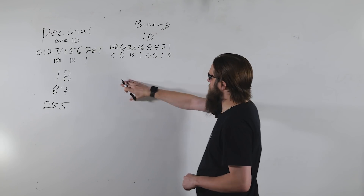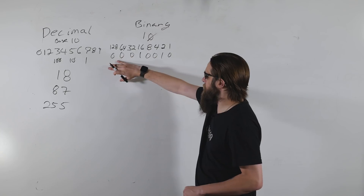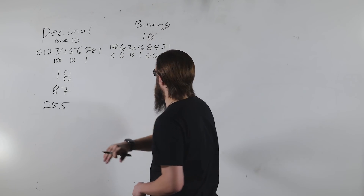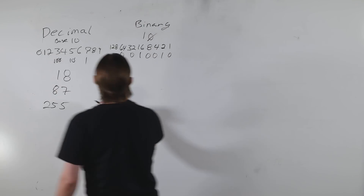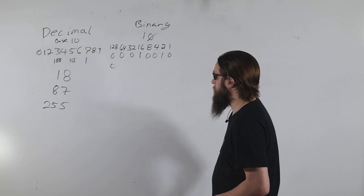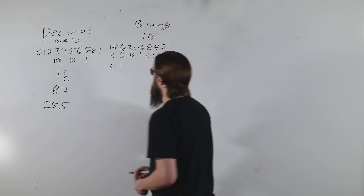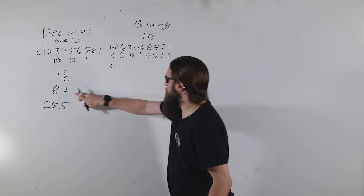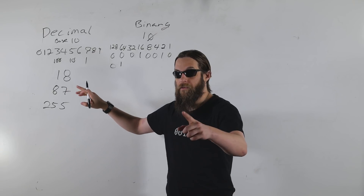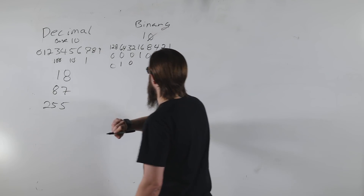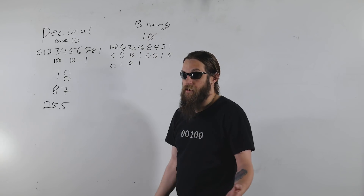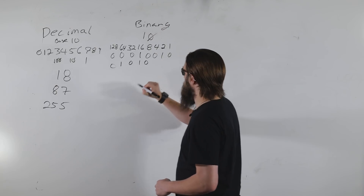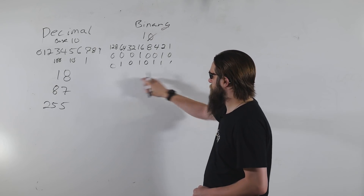If we want to translate 18 into binary, that string of zeros and ones — 00010010 — is 18. Now let's do 87. We don't have a 128, but we do have a 64. 87 minus 64 is 23. We don't have a 32 but we have a 16; 23 minus 16 is 7. So we don't have an 8, but we do have a 4, 2, and 1. That's 87.